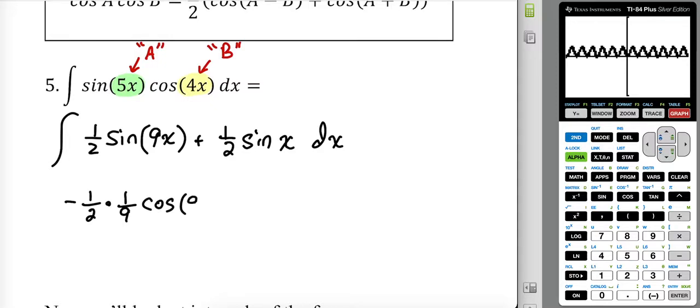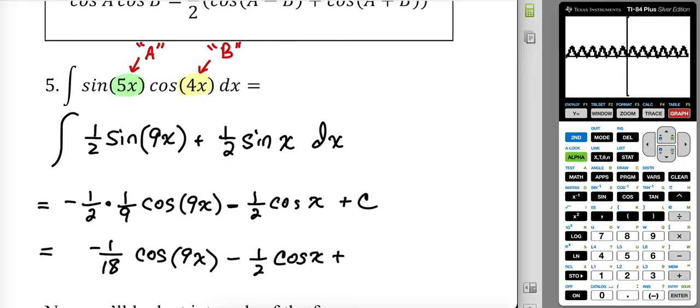Cosine of nine x. The antiderivative of sine is negative cosine, so I'm going to have a negative, the one half. The coefficient of the x is just a one, one over one is one. Cosine of x plus c. Then it's just a matter of housekeeping and we're done. Negative one over 18 cosine nine x minus one over two cosine of x plus c.